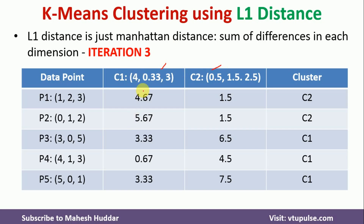With the updated centroids, I calculate distances again for all data points to C1 and C2. P1 is assigned to C2, P2 is again assigned to C2 since 1.5 is less than 4.67 and 1.5 is less than 5.67. For the remaining points: 3.33 is smaller than 6.5 so P3 is assigned to C1; 0.67 is smaller than 4.5 so P4 is assigned to C1; and 3.33 is smaller than 7.5 so P5 is assigned to C1.